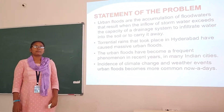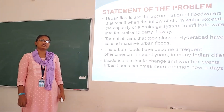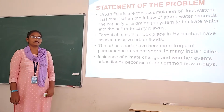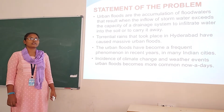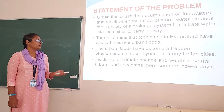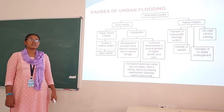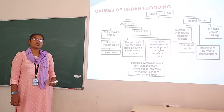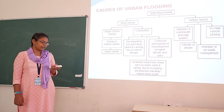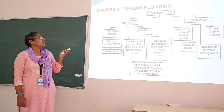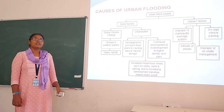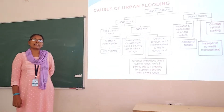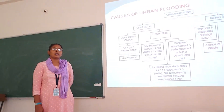Urban Floods. Urban flooding is the accumulation of floodwaters when the inflow of stormwater exceeds the capacity of the system to integrate the water into the soil or to carry it away. Urban flooding is caused by two factors: direct factors and indirect factors. Indirect factors include natural factors and organizational factors.